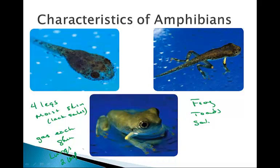A little bit different than the fish that we saw, which was a single loop. Here, amphibians are going to have a double loop, and as we mentioned, larvae are aquatic.